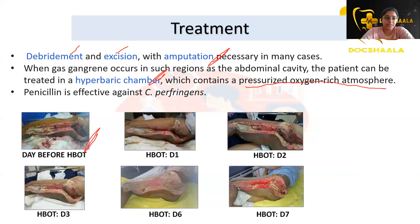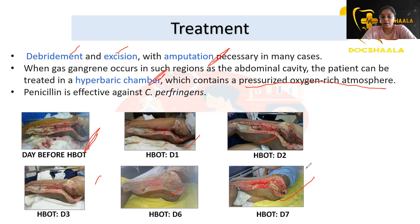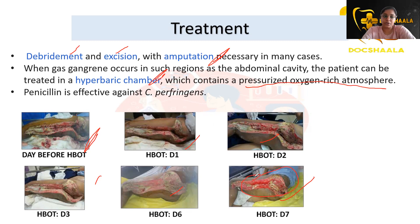This image shows the hyperbaric chamber treatment. When the patient presents with a lesion, you can see how it has progressed in healing from day one through day seven — from a black mass it has turned into healthy tissue. Penicillin is also effective against Clostridium, but it alone cannot help in the treatment of gas gangrene; it has to be combined with other treatments.